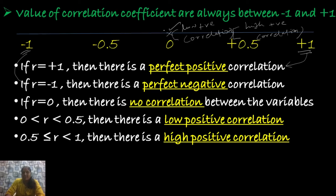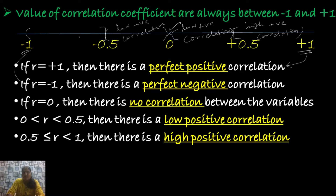Similarly, for the negative side: if R takes the value from 0 to minus 0.5 (exclusive), there exists a low negative correlation. If R takes the value from minus 0.5 (inclusive) to minus 1 (exclusive), there exists a high negative correlation between the two variables.